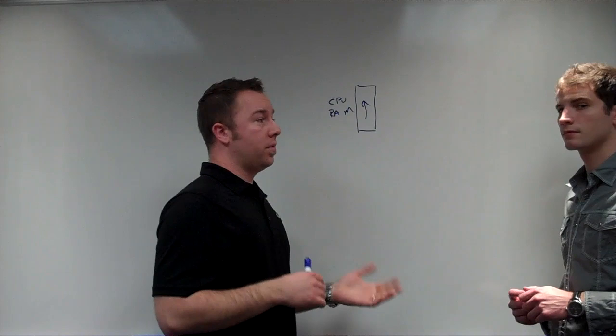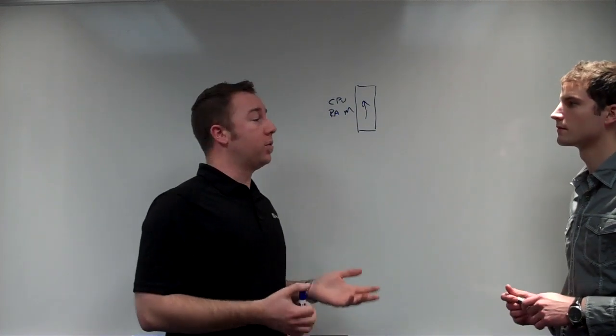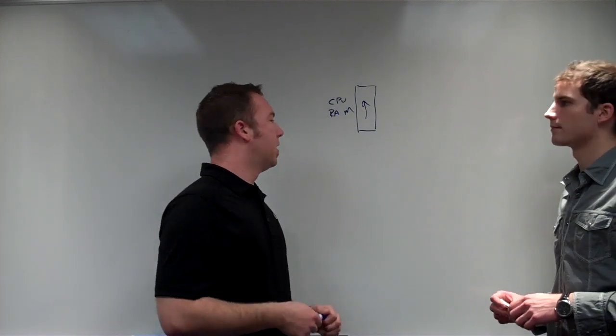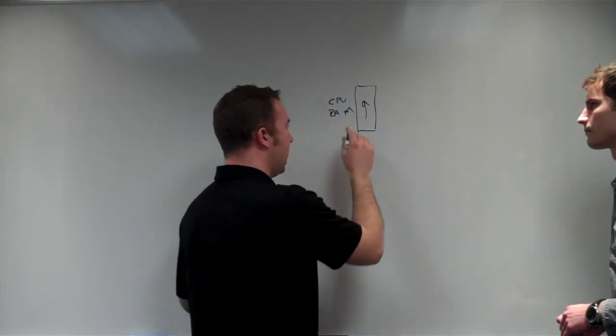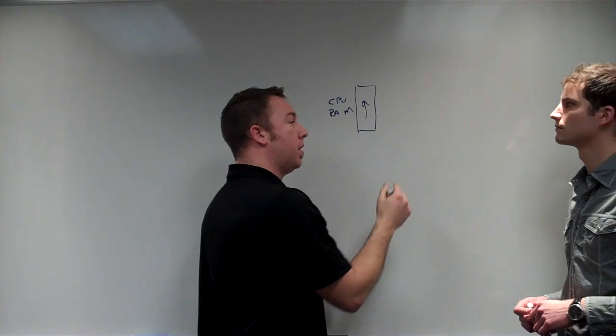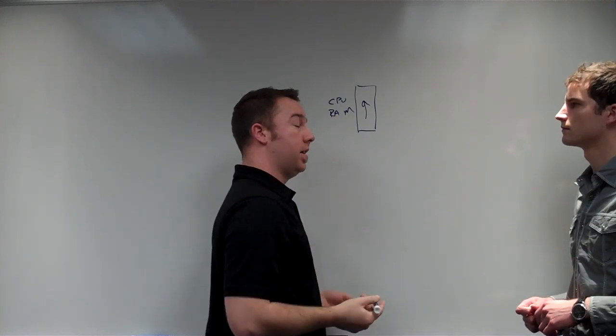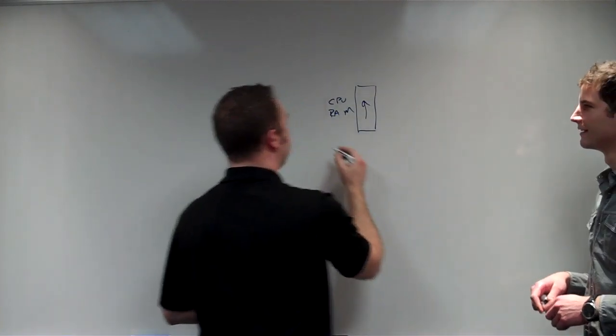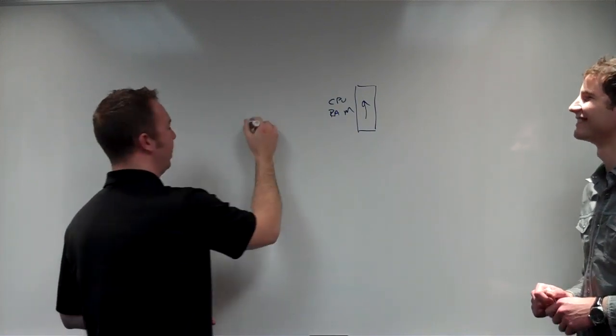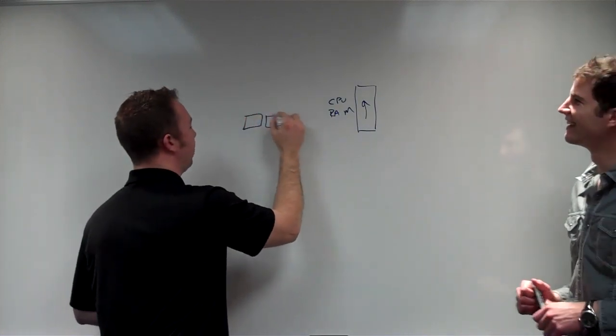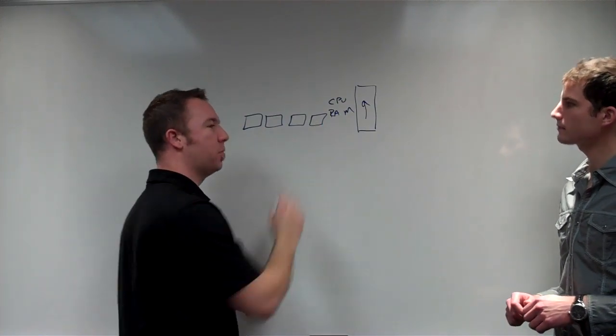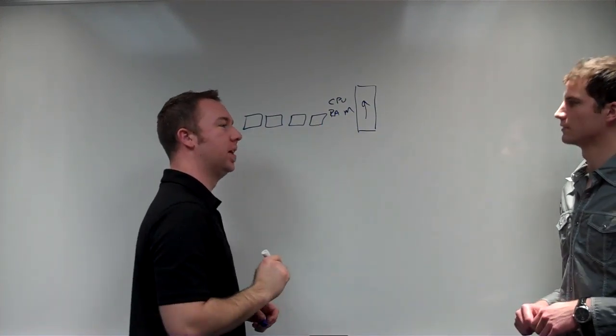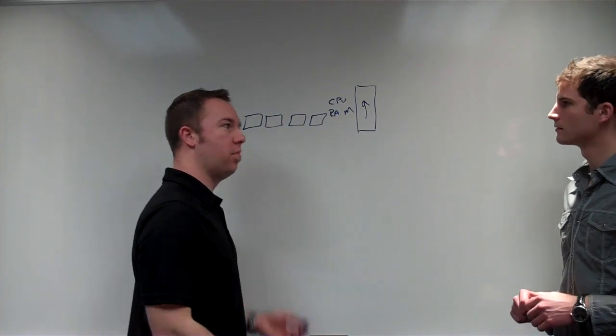If I could preach one thing about cloud computing, it would be scaling horizontally. So when we scale horizontally, not only do we gain more power, but we gain redundancy as well. Scale this way. Okay. So now I have four smaller machines versus this one big machine handling the same load, if not more.